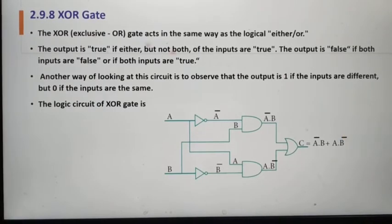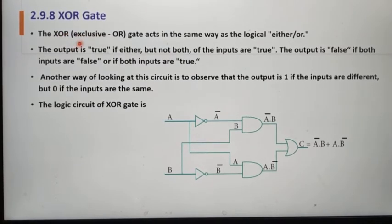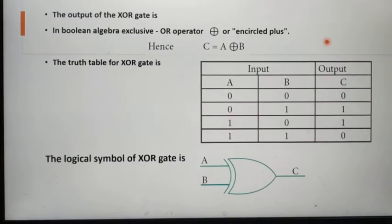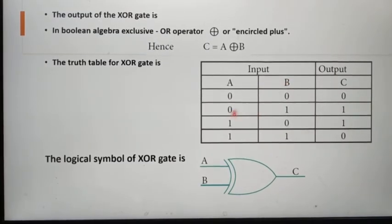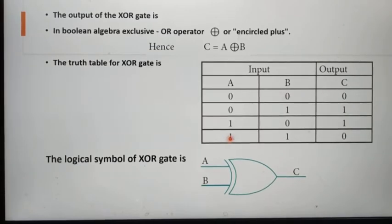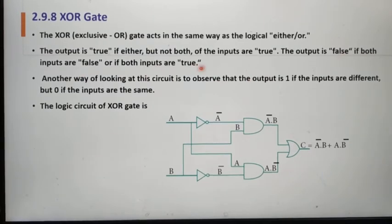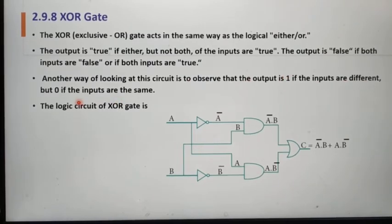Next we can see about the XOR Gate, also called the Exclusive OR Gate. The XOR gate acts in the same way as a logical 'either or'. The output is true if either but not both of the inputs are true. The output is false if both inputs are false or if both inputs are true. Another way of looking at this circuit: the output is 1 if inputs are different, but 0 if the inputs are the same.